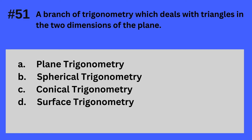Question 51. A branch of trigonometry which deals with triangles in the two dimensions of the plane. A. Plane Trigonometry, B. Spherical Trigonometry, C. Conical Trigonometry, D. Surface Trigonometry. The answer is A — Plane Trigonometry.